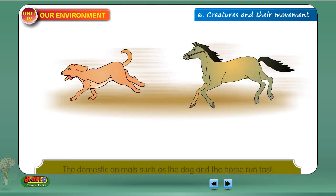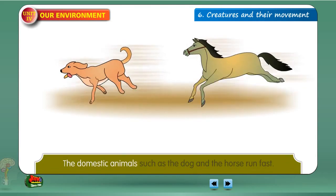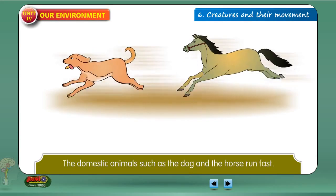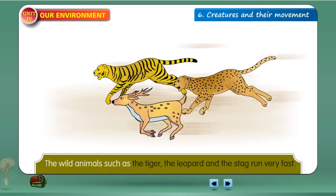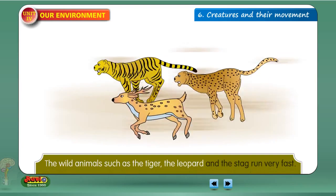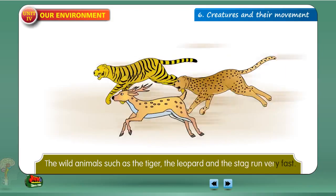Creatures and their movement. The domestic animals such as the dog and the horse run fast. The wild animals such as the tiger, the leopard and the stag run very fast.